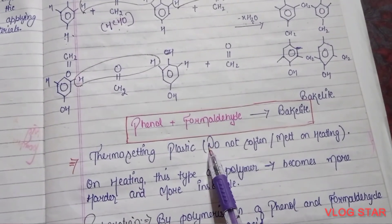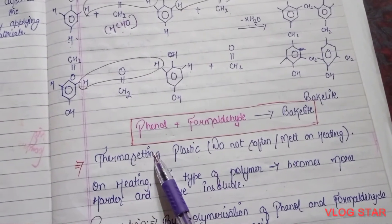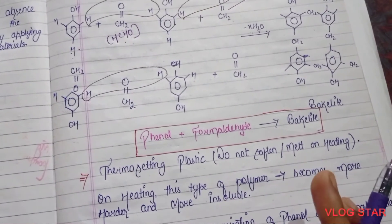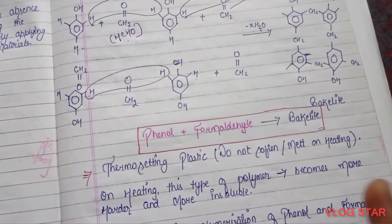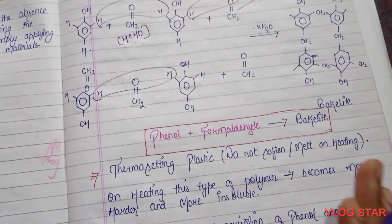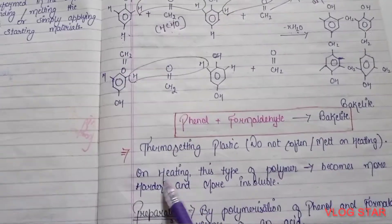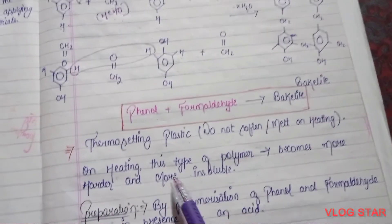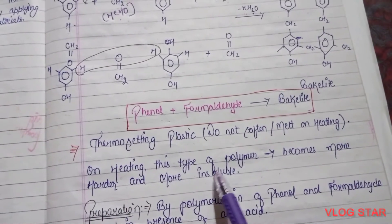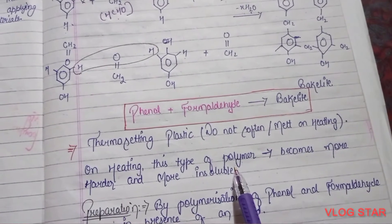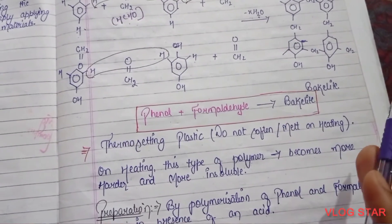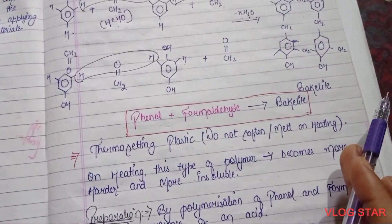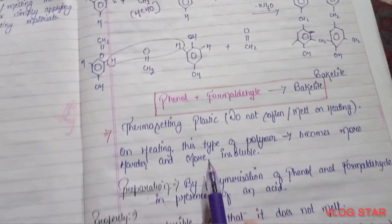Bakelite basically thermosetting plastic hai. Thermosetting plastic ka matlab hota hai ki agar hum usko heat karenge to melt nahi hoga, soft nahi hoga. On heating, this type of polymer becomes harder and more insoluble — jab hum is tarah ke polymer ko heat karte hain toh woh aur bhi zyada hard ho jata hai aur insoluble ho jata hai.